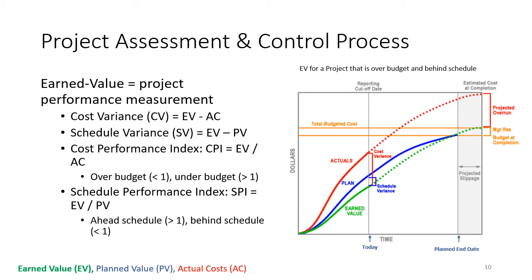One way of reporting this concisely is the cost performance index, or CPI, which is earned value divided by actual cost. You are over budget if CPI is less than one and under budget if it is greater than one. Likewise, the schedule performance index, or SPI, is earned value divided by planned value — you are ahead of schedule if that ratio is greater than one and behind schedule if it is less than one. These are the main points about how to use earned value to assess and control project performance.